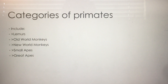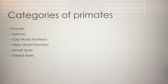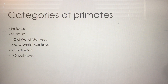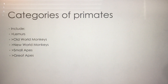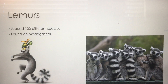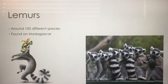Here are the categories of different primates: lemurs, old world monkeys — meaning Africa and Asia — new world monkeys — meaning South America — small apes, and the great apes. As I said earlier, we are great apes.